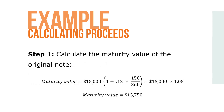Step 1: Calculate the maturity value of the original note using the following formula: maturity value equals $15,000 times (1 plus 0.12 times 150/360), which equals $15,000 times 1.05, for a maturity value of $15,750.